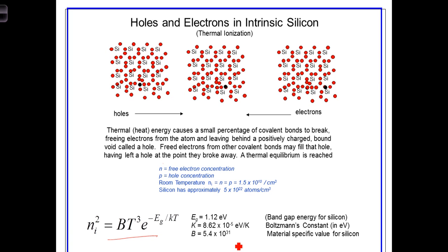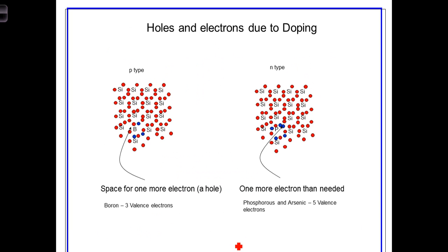Up until now, we've been talking about intrinsic or pure silicon. The process of changing the electrical properties of a semiconductor by replacing a relatively small number of silicon atoms in the crystal structure with atoms of other carefully selected elements is known as doping. So we're representing here that a silicon atom has been replaced by a boron atom.